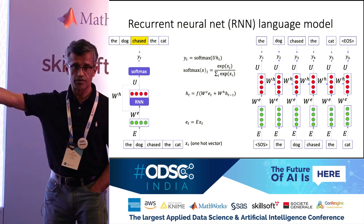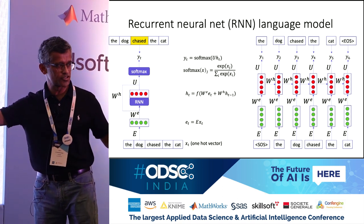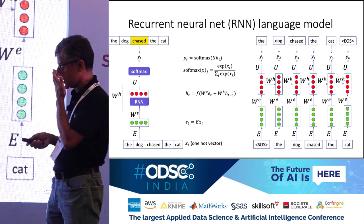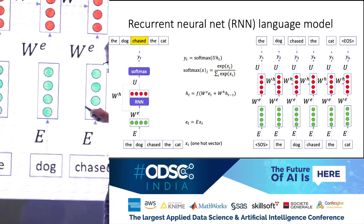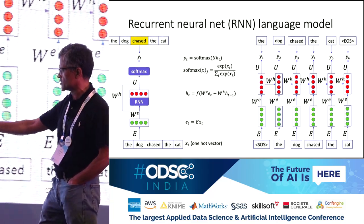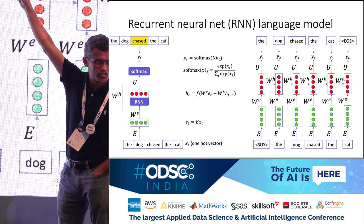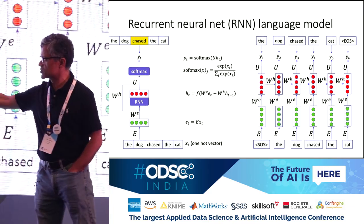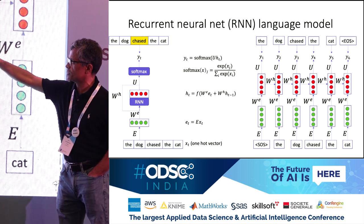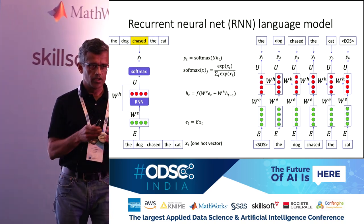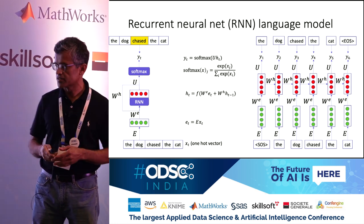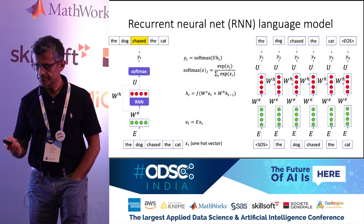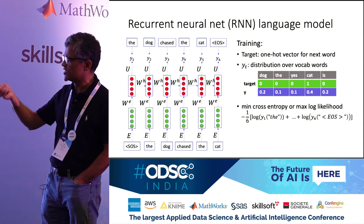One way to represent a recurrent neural network is the static form. But what you'll often see is an unrolled representation, where we've taken the same structure and copied it as many times as there are words in the sentence. First we get the start of sentence token, it goes through the network and hopefully produces 'the,' then 'the' produces 'dog,' and so forth. These weights are shared — all the weights are the same across time steps. It's just a way of representing the RNN; if the sentence is longer, we unroll it more.